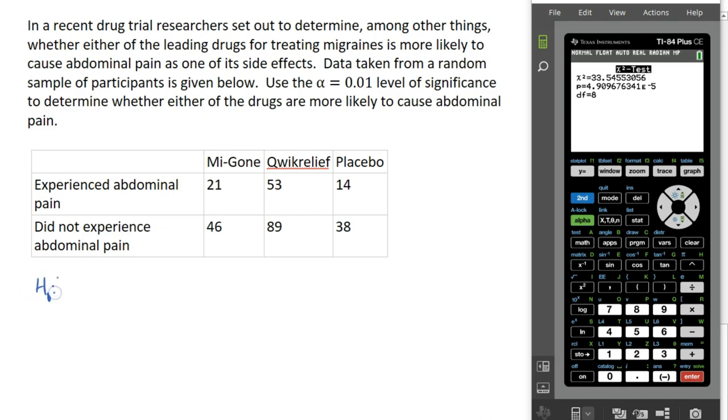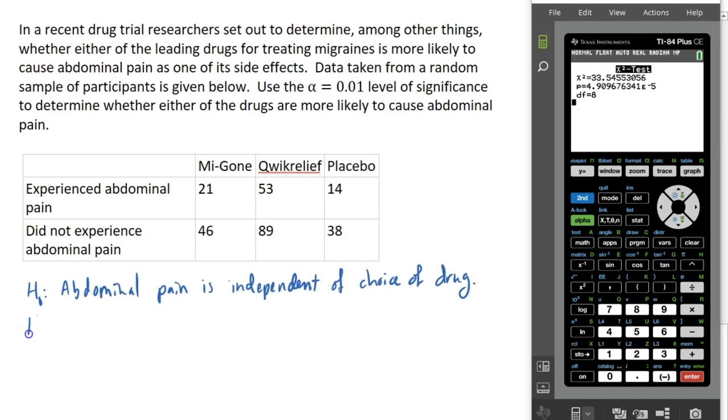So our null hypothesis is that abdominal pain is independent of which drug we choose. And our alternate hypothesis is that there's some dependence here. So one of these drugs is more likely than the other to result in abdominal pain. So as we did in the last example, our first step is to fill in our matrix.